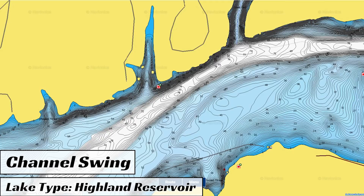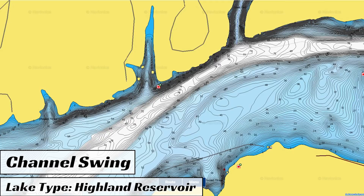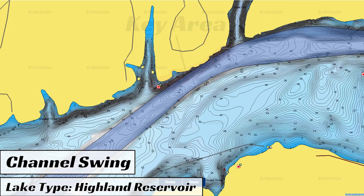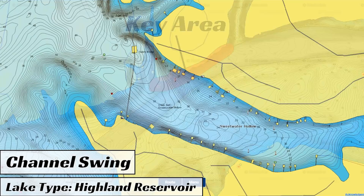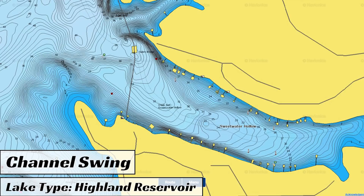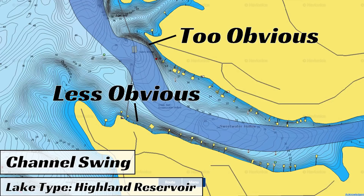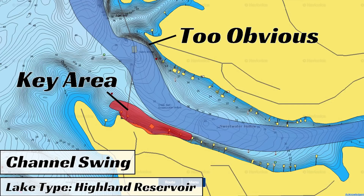The next type of structure I target in the wintertime is channel swings. This is another shallow type of structure that can be found on almost every single lake or reservoir throughout the country. A channel swing is any place where an old creek channel runs up close to the shoreline, creating a sharp drop-off from the bank into deeper water. One common misconception about winter bass fishing is that bass are going to set up in deeper water against the steepest banks you can find. While this can be true, I've also caught bass in as shallow as two to three feet of water in 40 degree water temperatures on a crankbait.